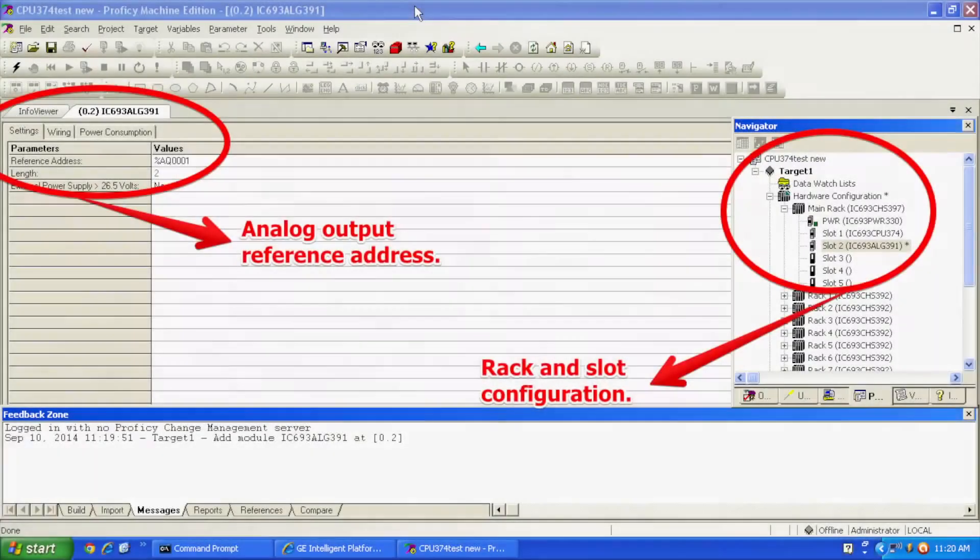Now on the Proficy Machine Edition side, I've opened up a new blank file that I have configured. And what I did was I opened up the main rack, which is what I'm using, and I switched it to a five-slot CHS397. And I have the same exact configuration that you see physically here before you.